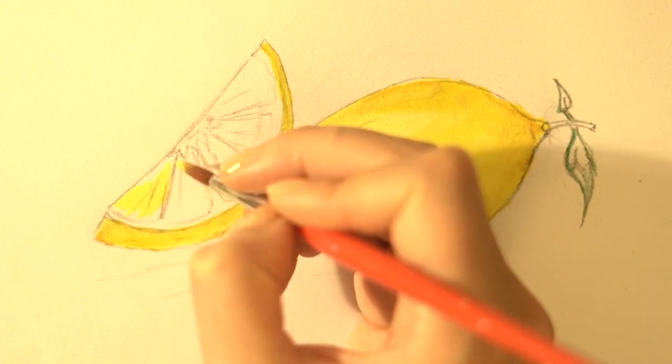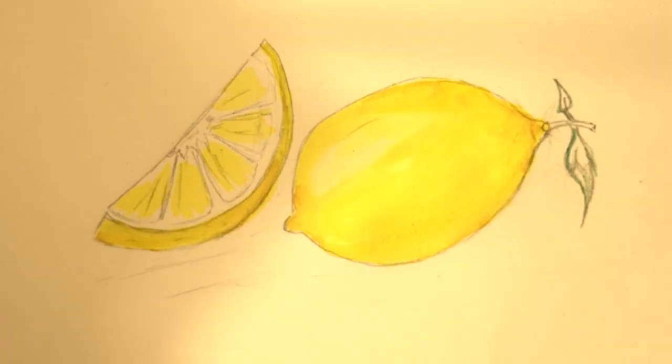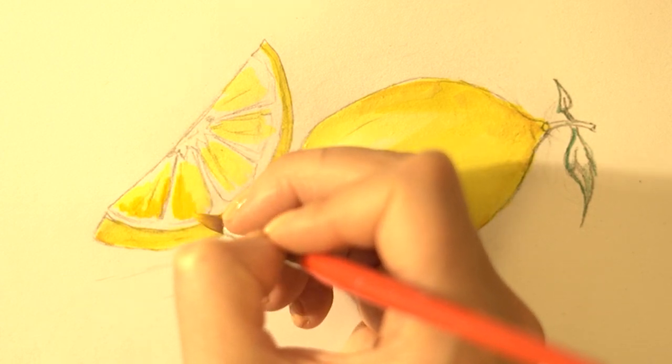Now we go back to the original lemon yellow color for the segments, which will be bright. Orange brown will let us create more texture here as well.